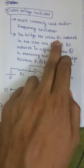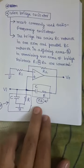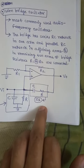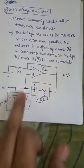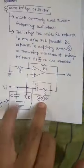The bridge has a series RC network in one arm denoted by Zs (series impedance) and a parallel RC network in the adjoining arm denoted by Zp (parallel impedance).